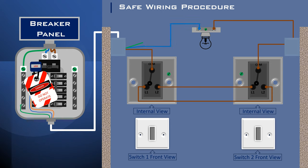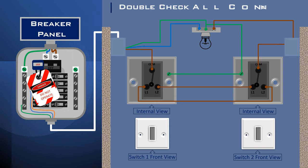Finally, to make the circuit safe, connect the green or yellow earth wire to the earth terminal of both switches and the fixture. Double check all connections to ensure they are secure and properly insulated.